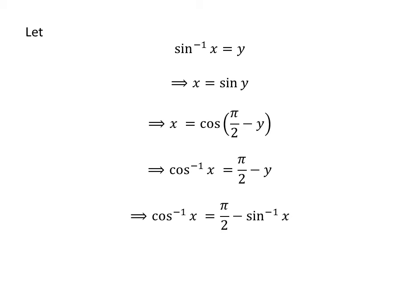Since y equals sin⁻¹(x), we substitute into cos⁻¹(x) = π/2 - y to get cos⁻¹(x) = π/2 - sin⁻¹(x). Rearranging gives sin⁻¹(x) + cos⁻¹(x) = π/2. Therefore, the identity is proved.